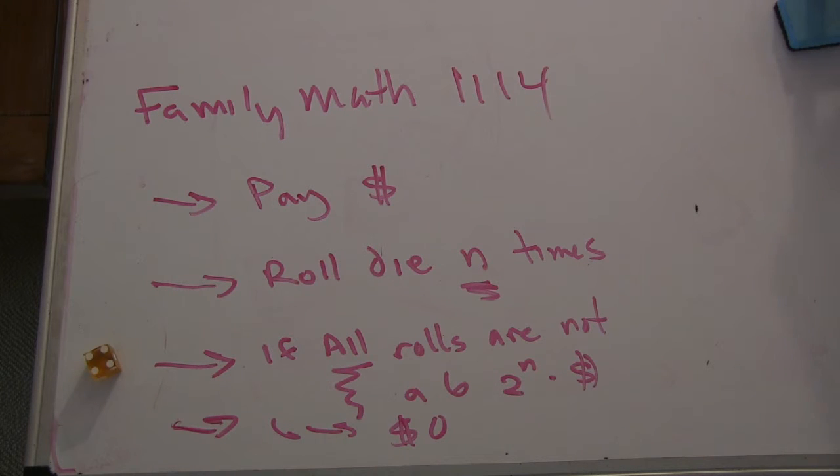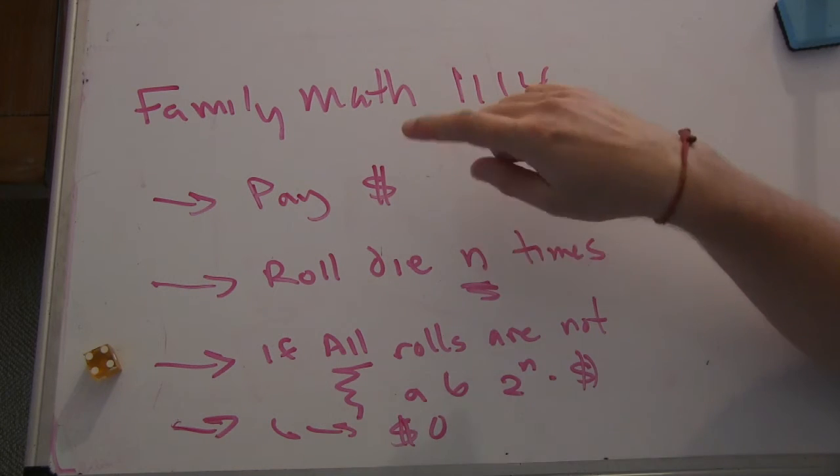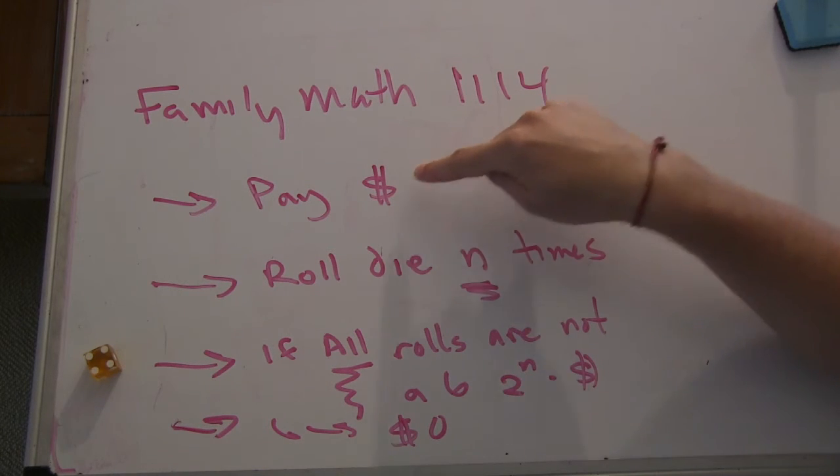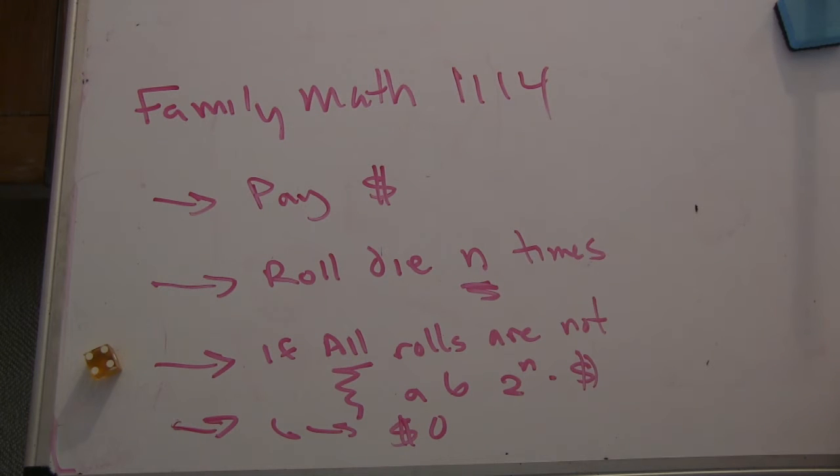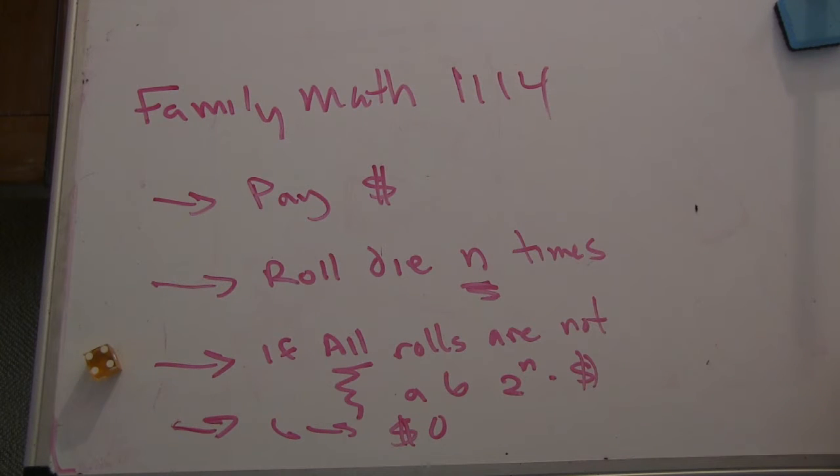It's a pretty simple game. You get to pick the rules here. However much money you want to pay, and how many times you want to roll. As long as you don't roll a 6 in those n rolls, you get 2 to the n times the amount of money you paid. If you get a 6, I keep your money.